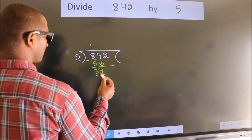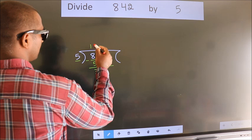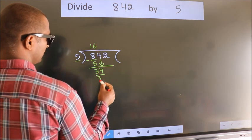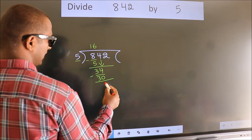After this, bring down the beside number, so 4 down. So 34. A number close to 34 in the 5 table is 5 times 6, which is 30. Now we subtract, we get 4.